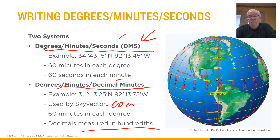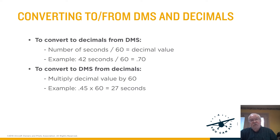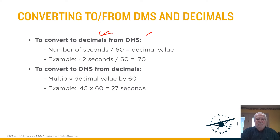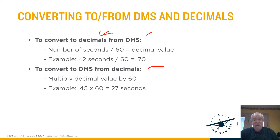Decimals are measuring hundredths, of course. Here are the formulas for converting from DMS — degrees, minutes, seconds — which is the common thing we normally use, to decimals, because skyvector.com uses decimals. So you may need to convert back and forth. To convert from skyvector to what we normally use, you just divide by 60. And if you need to find the decimal one, you multiply by 60. It's a pretty simple formula. Don't obsess over this — we'll practice.